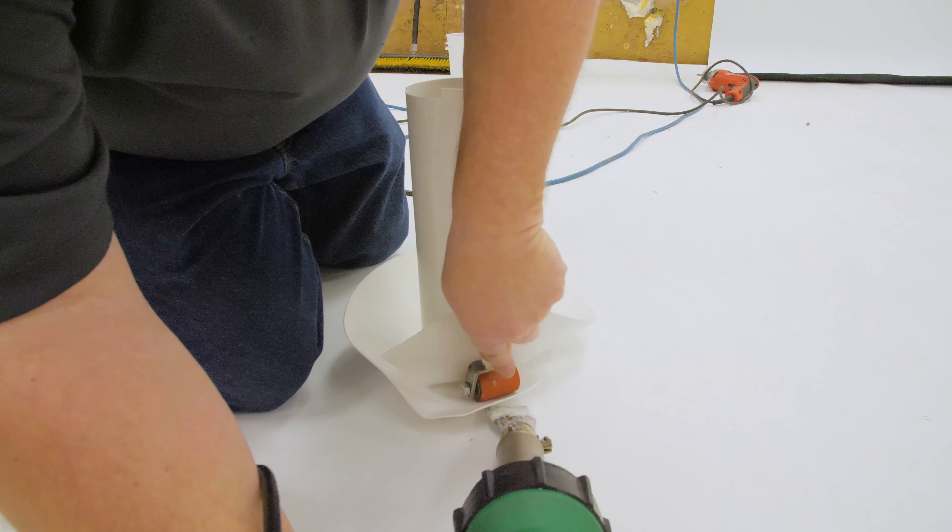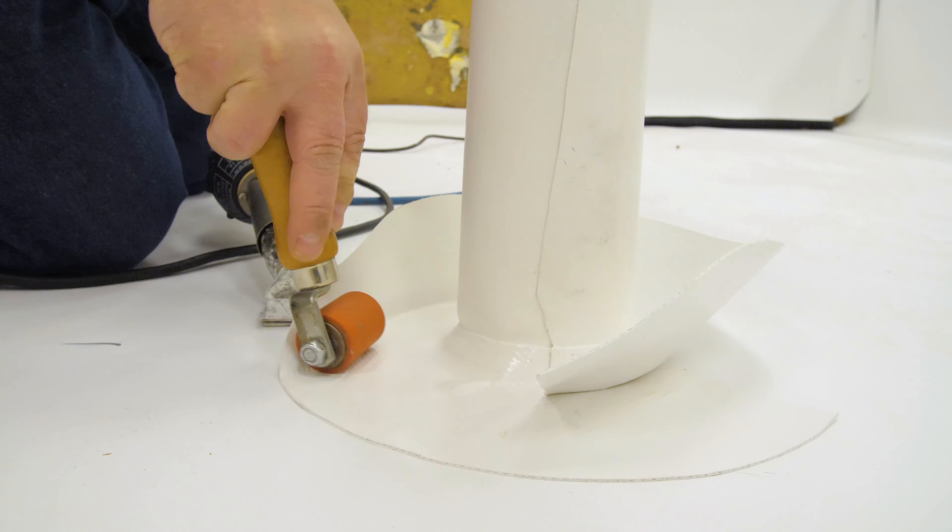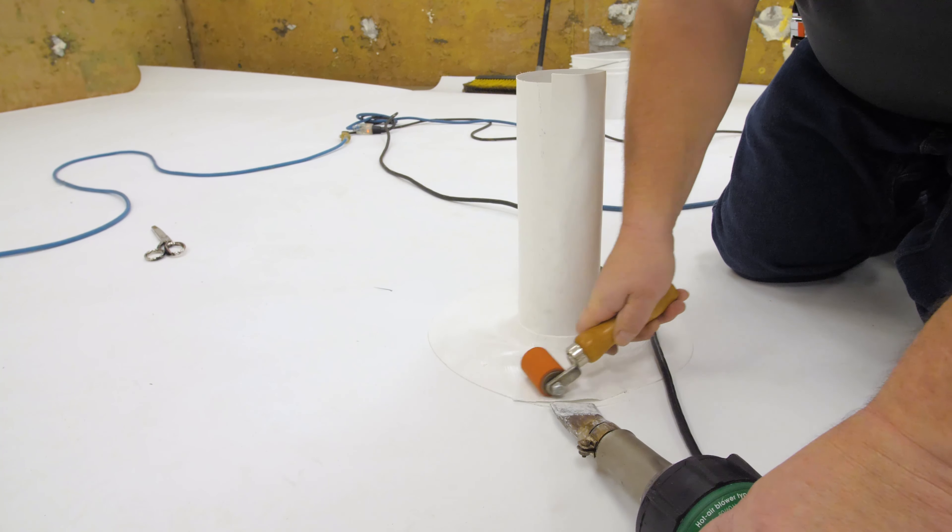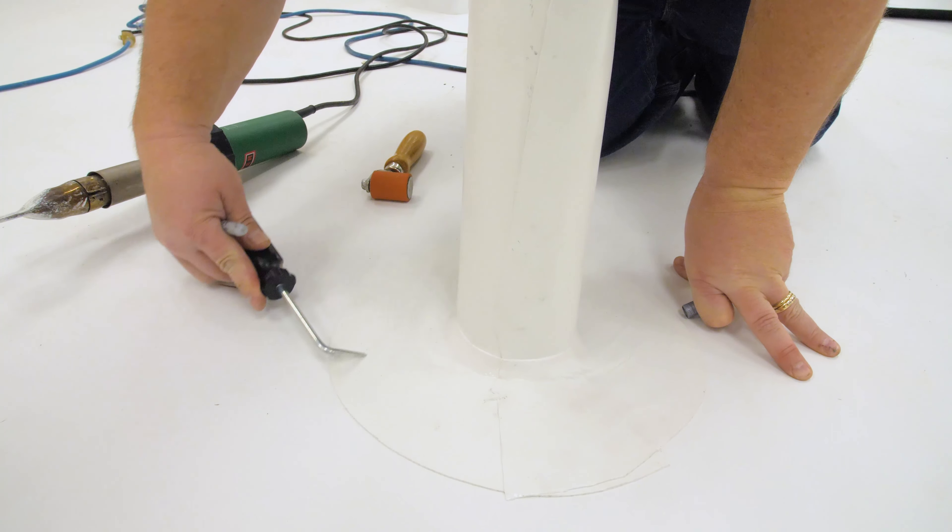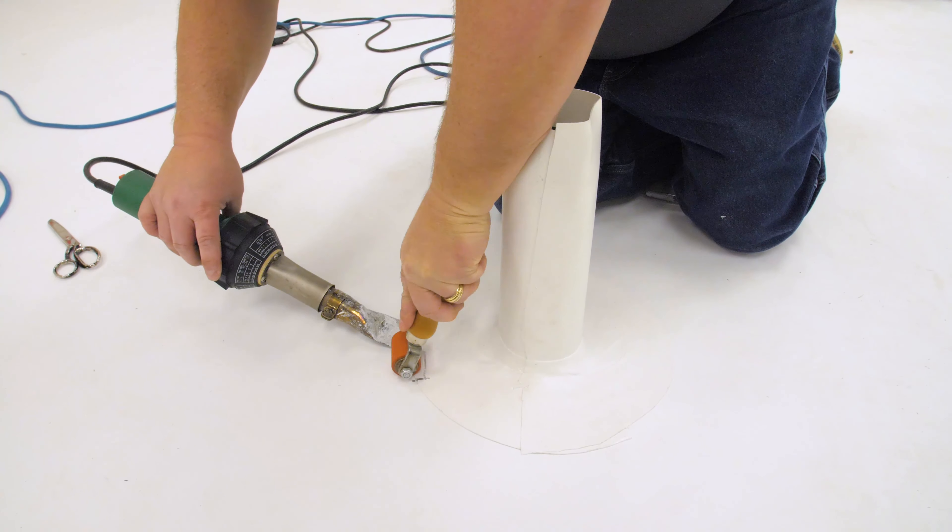Weld the entire base flange. When welding the horizontal overlap, start from the base of the pipe and work out. Allow it to cool, then probe all seams for voids. Fix all voids as needed.